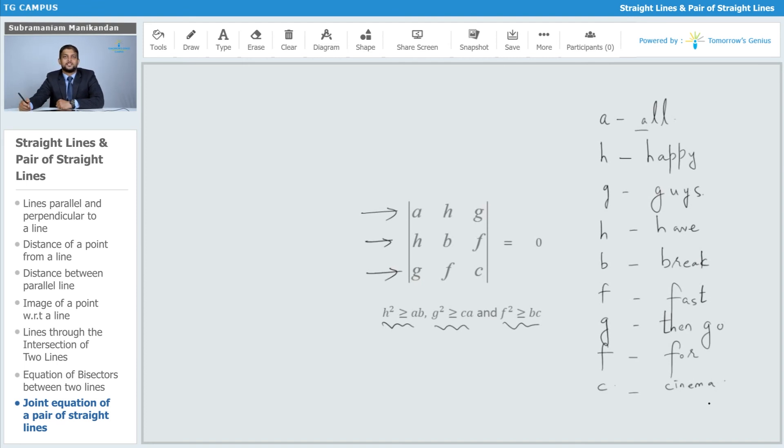You can represent this using this memory aid I just made up, but you can use anything you like. 'All Happy Guys Have Breakfast and then Go For Cinema.' This is just a simple memory aid, a simple sentence to help you remember the coefficients which come in this determinant in what order, so that the determinant can be equated to zero and hence you can find the condition for the second degree equation to represent a pair of straight lines.